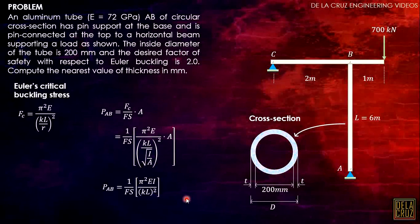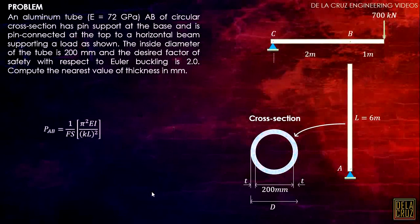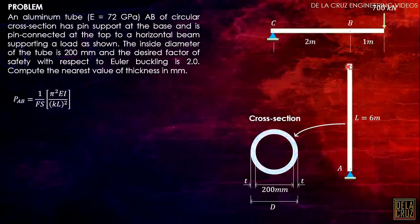We need to calculate first the force in member AB, this one. Let's isolate this member ABC here. Take note, what we want to get is the force in member AB, so we need to calculate the reaction at joint B, and that is just by summation of moment about C that should be zero.